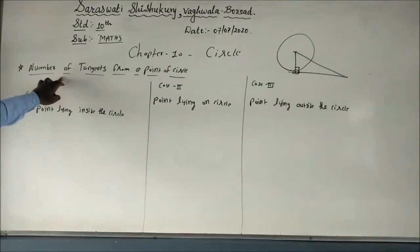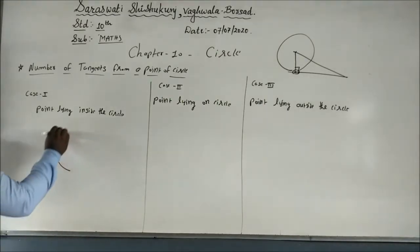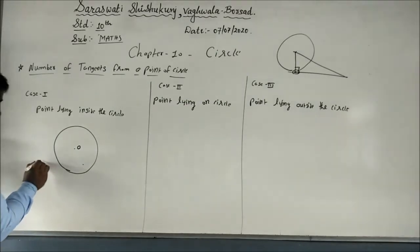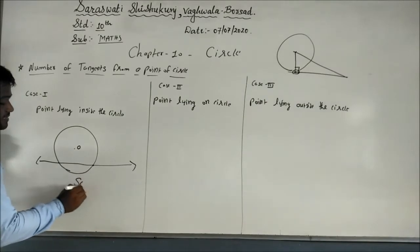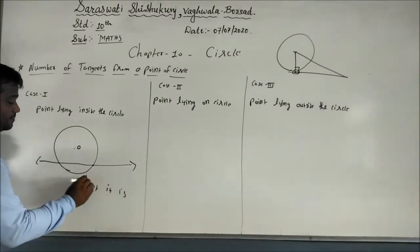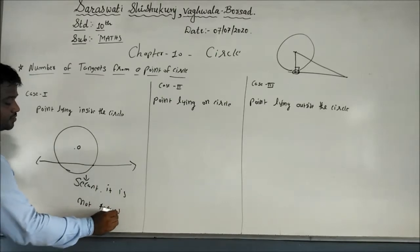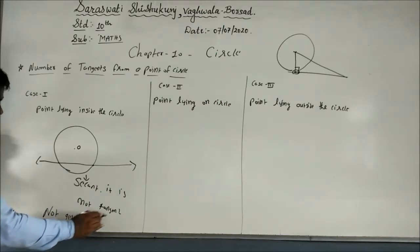Today's topic is the number of tangents from a point on a circle. There are three cases you must remember, as this is asked in one-mark questions. Case one: the point lies inside the circle. When the point is inside the circle, if you try to draw a tangent, it will not remain a tangent — it becomes a secant.